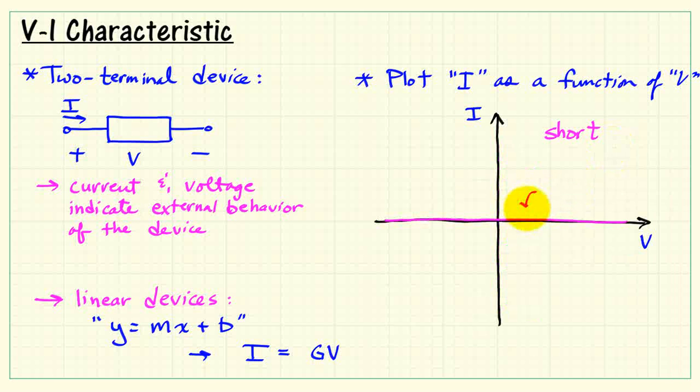The other extreme is where the conductance equals zero, and in this case, we have an open circuit. So we can see that as we vary the slope, we get different situations for resistance.